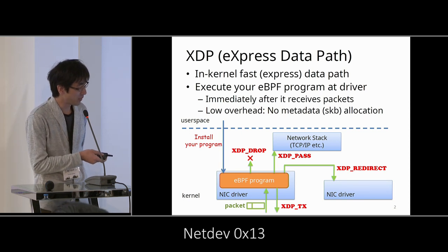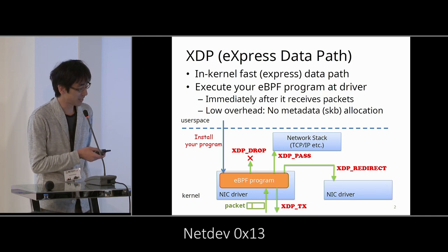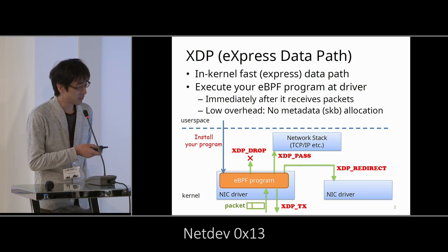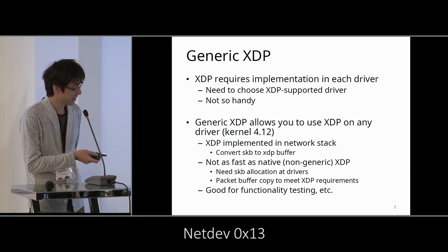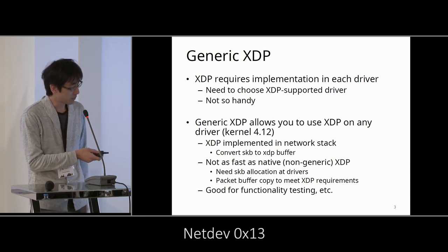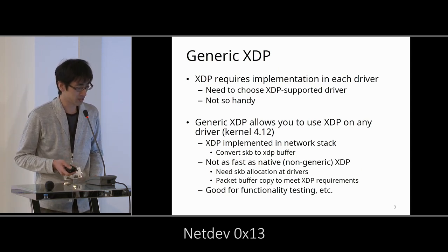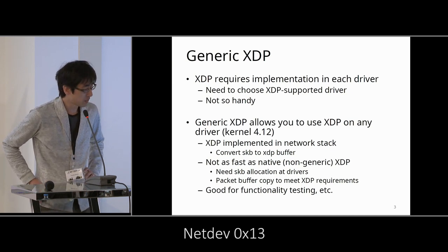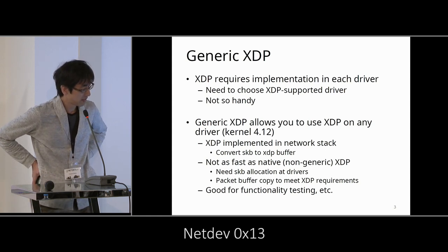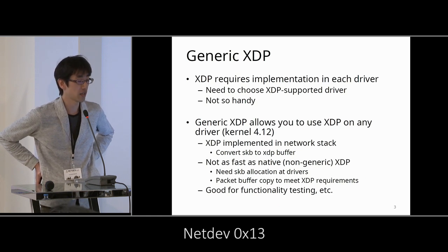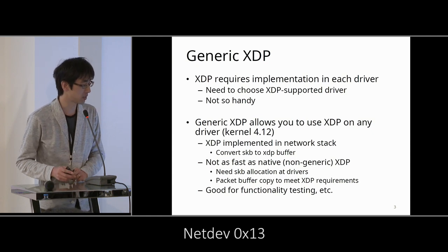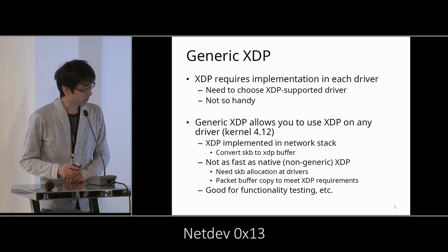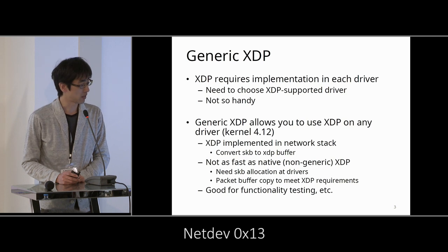XDP is fast because it handles packets immediately after receiving them, so it has low overhead. For example, it can avoid SKB metadata allocation. Generic XDP is implemented in the network stack, so it requires SKB allocation, making it not as fast as native XDP. In some cases, it requires packet buffer copy to meet XDP headroom requirements. It's not for performance, but good for functional testing or trial uses for beginners.